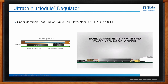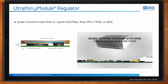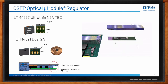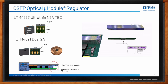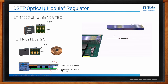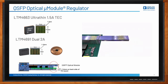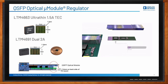What kind of micromodule options does Analog Devices offer? Our ultra-thin micromodule LTM4663 offers 1.5 amps output current and a 1.3 millimeter height, and the LTM4691 offers dual 2 amps output current with a height of 1.8 millimeters. Both meet the height restriction of 1.4 millimeters required by QSFP-E optical transceiver applications.